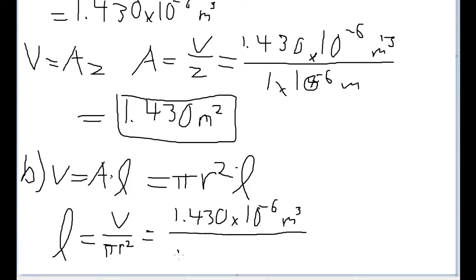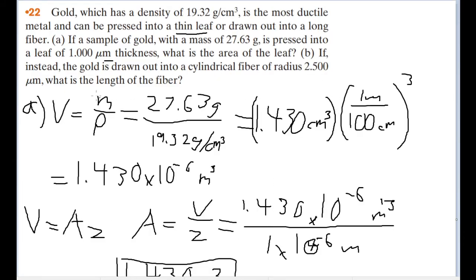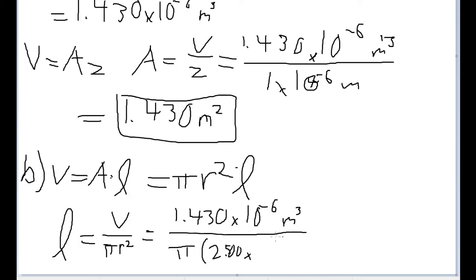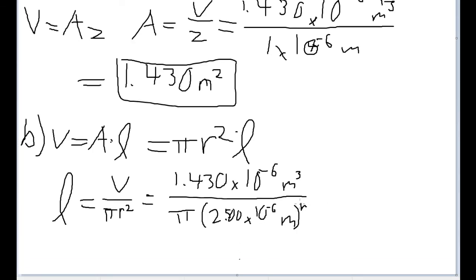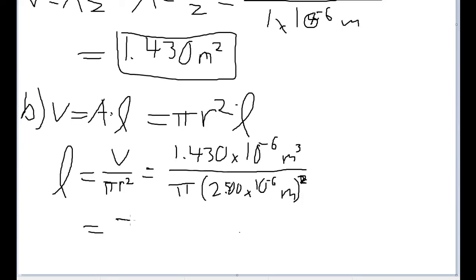Divided by pi r squared. So that's pi times the radius squared. And the radius, as the problem gives us, is 2.500 micrometers. So that's 2.5 times 10 to the negative 6 meters. So let's write that out here. And of course, don't forget to square it. That's an important piece. Or else you won't get even close to the right answer. So remember to square it. And the answer we get there is a length of about 7.284 times 10 to the fourth power of meters.